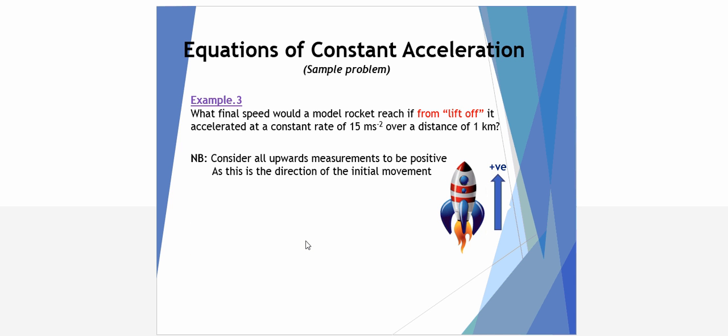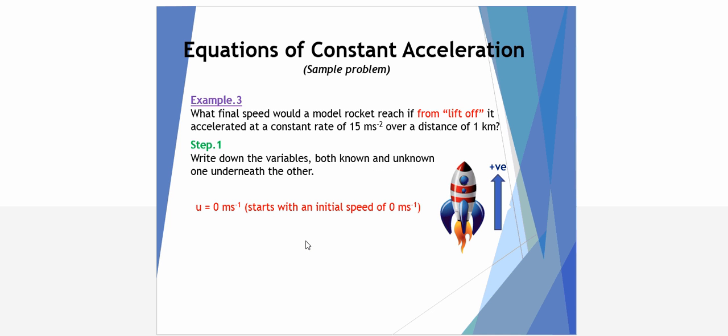Our third and final example. What final speed would a model rocket reach if, from liftoff, it accelerated at a constant rate of 15 metres per second per second over a distance of 1 kilometre? Because the rocket is going up as the initial movement, we'll consider upwards as our positive direction. It's from liftoff. Liftoff means we have initial speed of 0. U equals 0. A equals 15 metres per second per second, which is stated in the question.